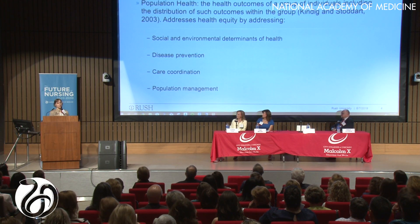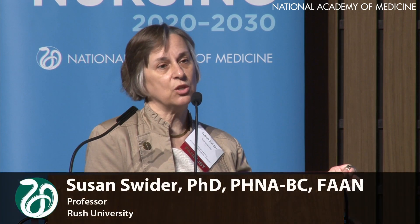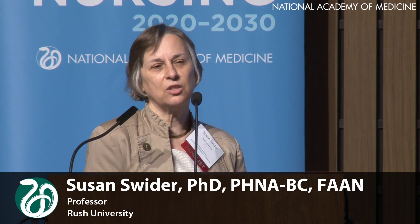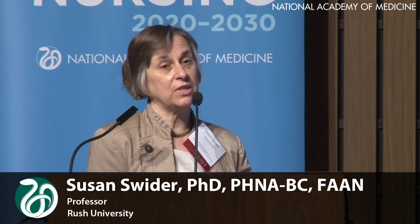Nursing education started to look at this at least a decade ago and ask what we need to be doing as we educate students to help them address some of these missing factors. We used the term population health as a proxy for looking at social determinants, trying to achieve health equity, addressing health disparities — really population health being outcomes across populations and how they're distributed. For us in nursing education, it boiled down to social and environmental determinants of health, disease prevention, coordinating care both inside and outside of health care institutions, and population management across the care continuum.